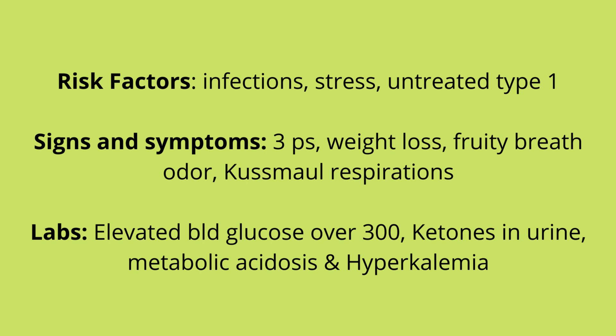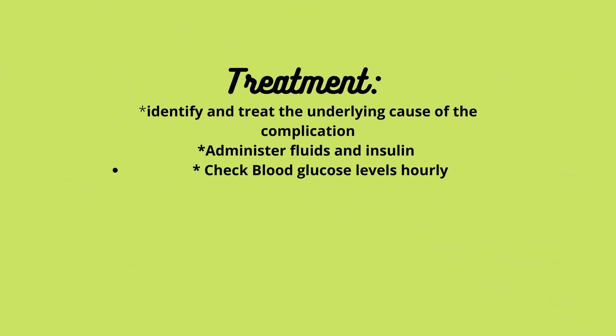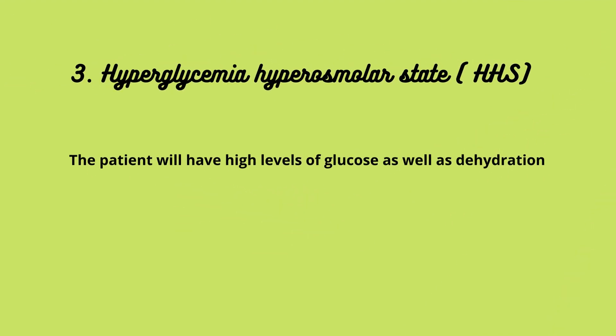Additional signs and symptoms of DKA include weight loss, fruity breath odor, Kussmaul respirations, dehydration, hyperglycemia, metabolic acidosis, hypokalemia, hypocalcemia, hypomagnesemia, and hypophosphatemia. With labs, we'll see an elevated blood glucose level over 300, ketones present in the urine, metabolic acidosis, and hyperkalemia.